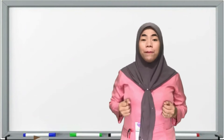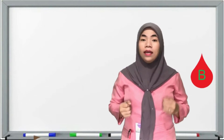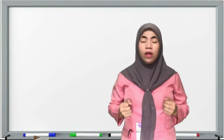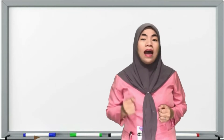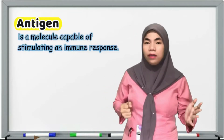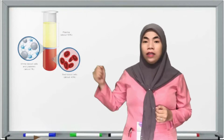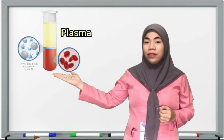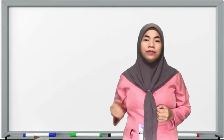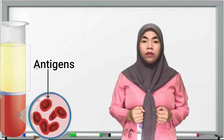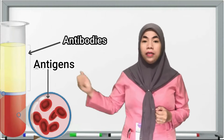Now let's talk about blood types: type A, type B, type AB, and type O. For us to understand these blood types, we first need to understand the concept of antigens and antibodies. Our blood is a specialized body fluid composed of the plasma, the red blood cells, the white blood cells, and the platelets. Antigens are found on the surface of the red blood cells, while antibodies are found in the plasma.